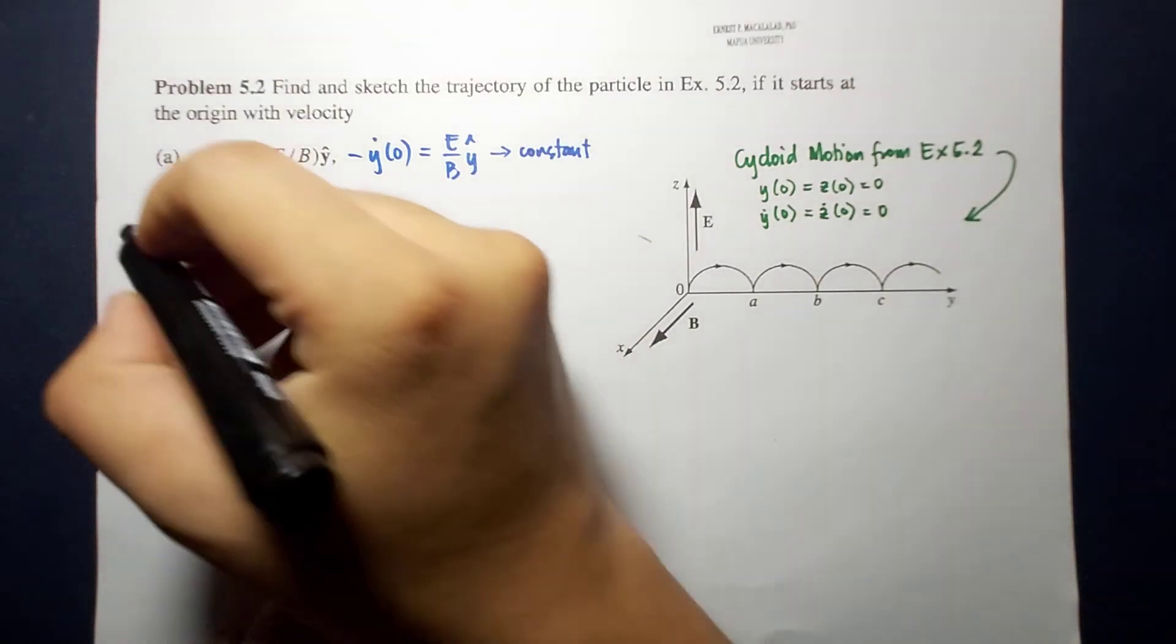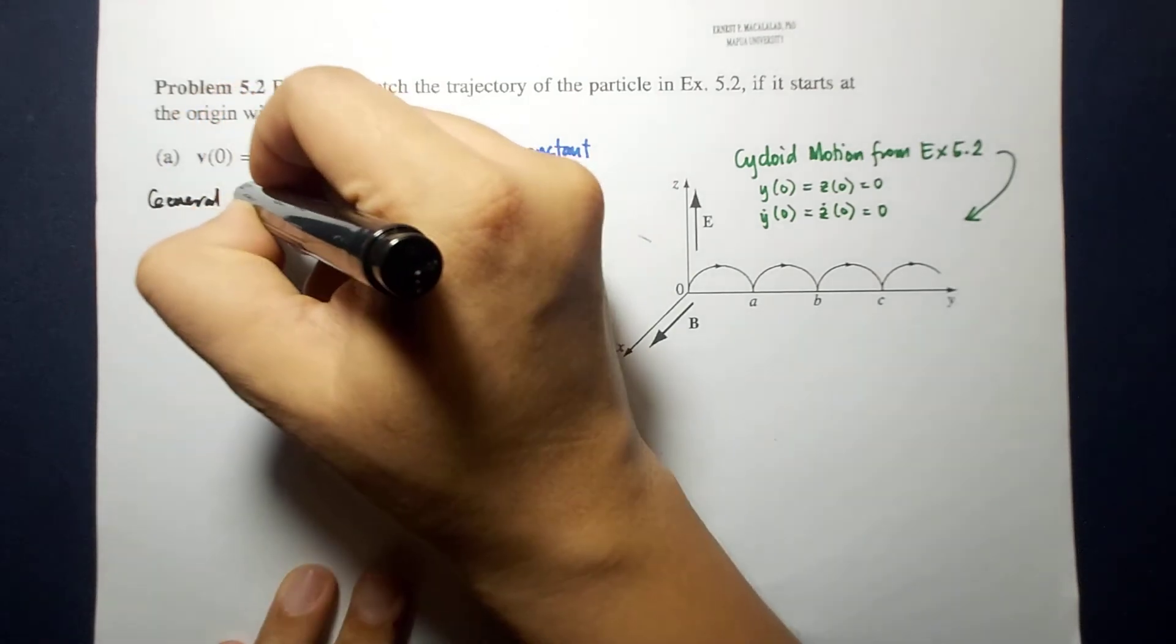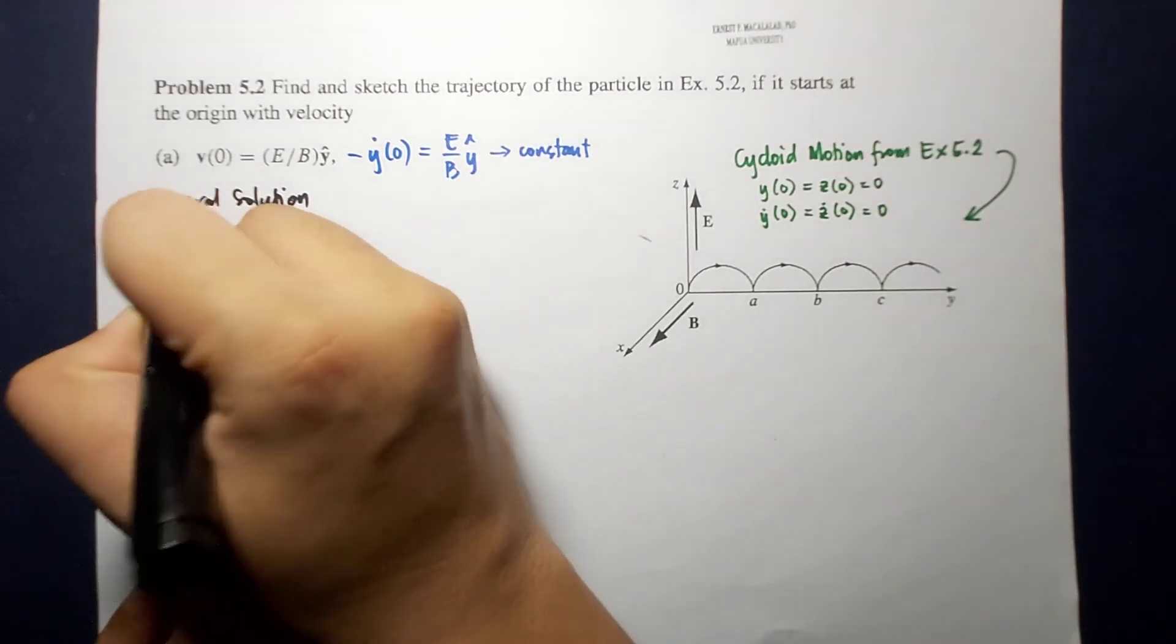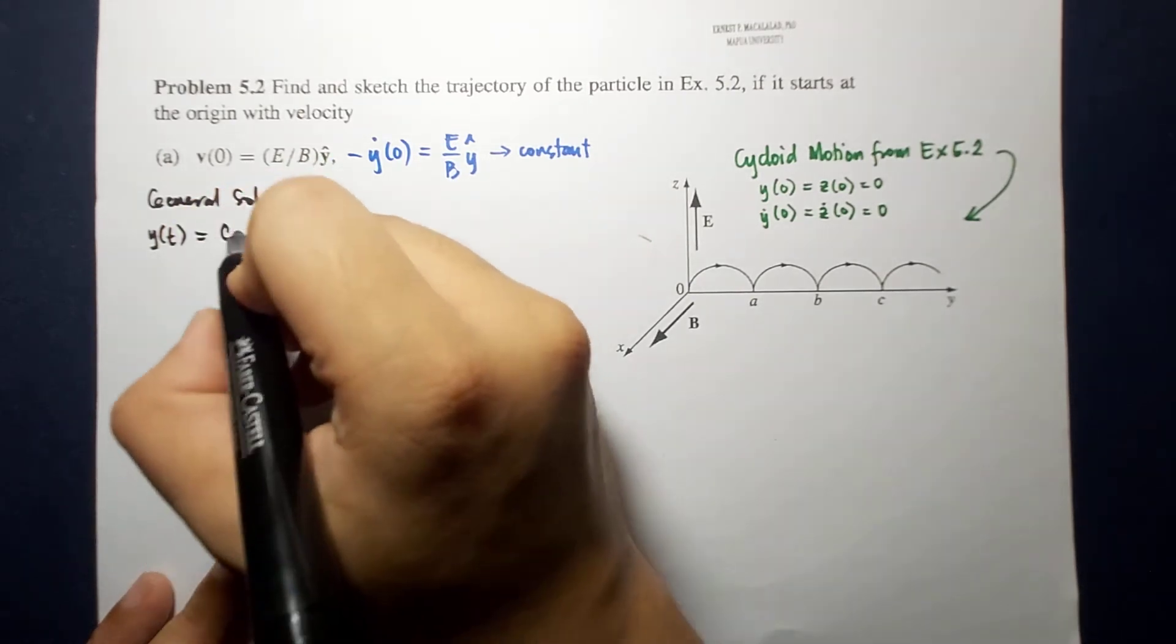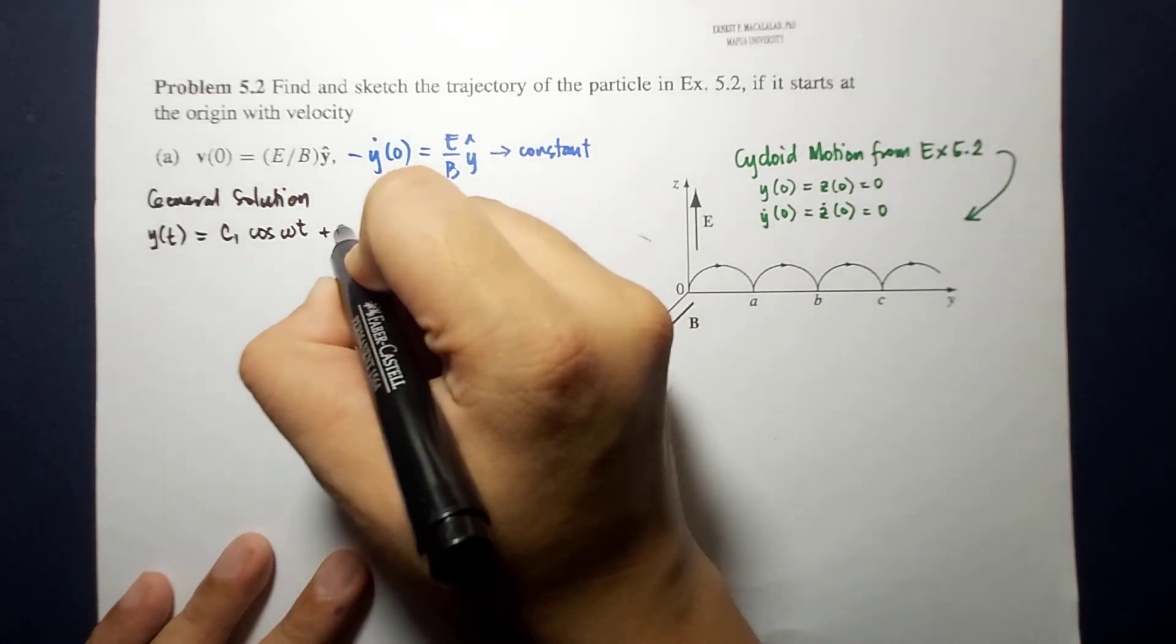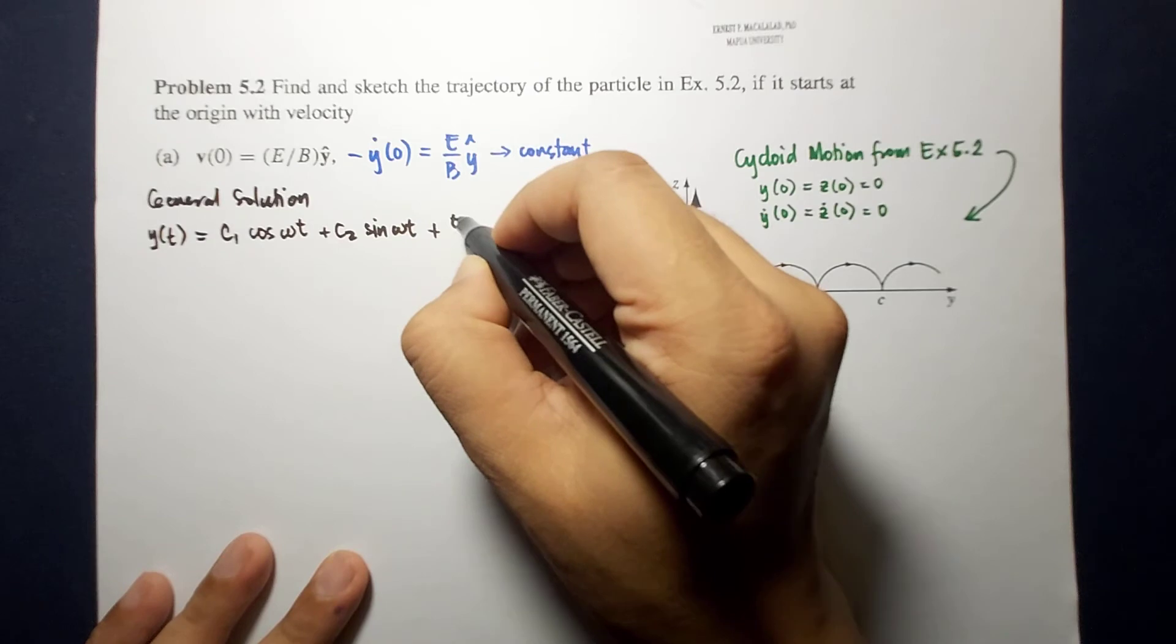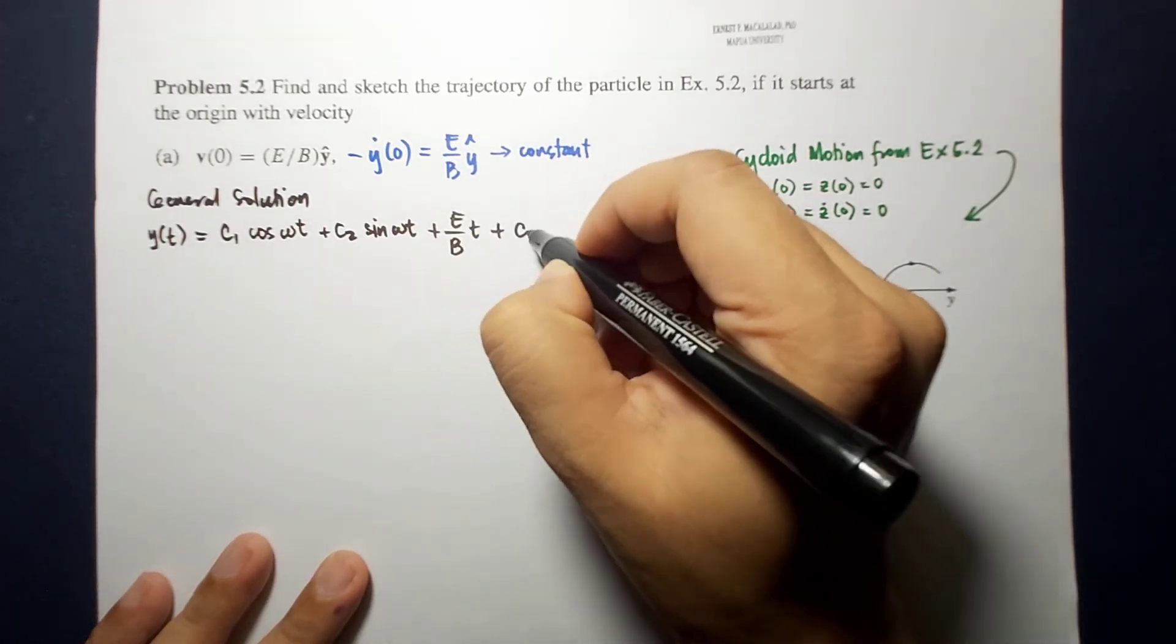Now, going back to the general solution which we discussed earlier, along the y, this is equal to c1 cosine omega t plus c2 sine omega t plus e over b t plus c3.